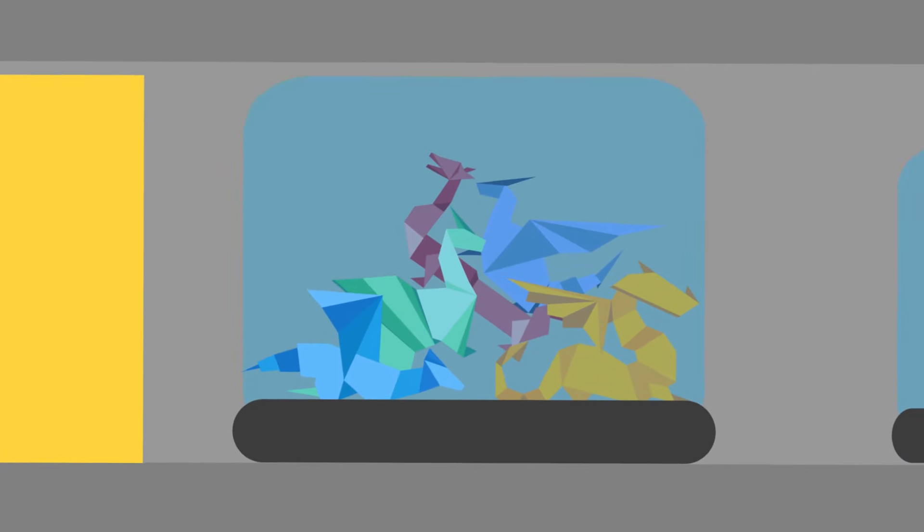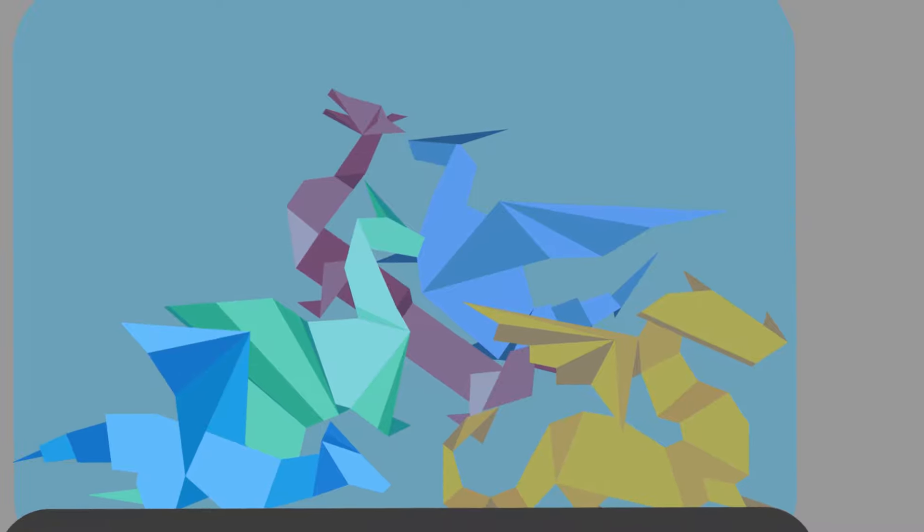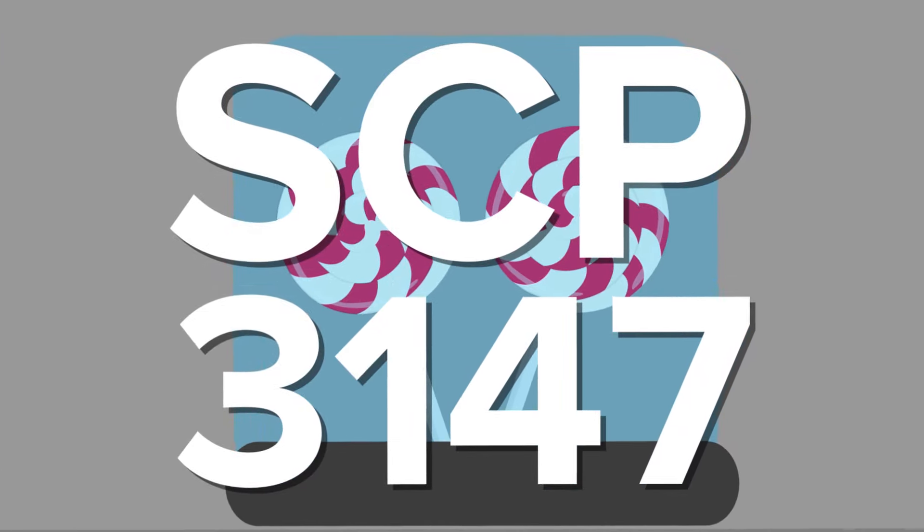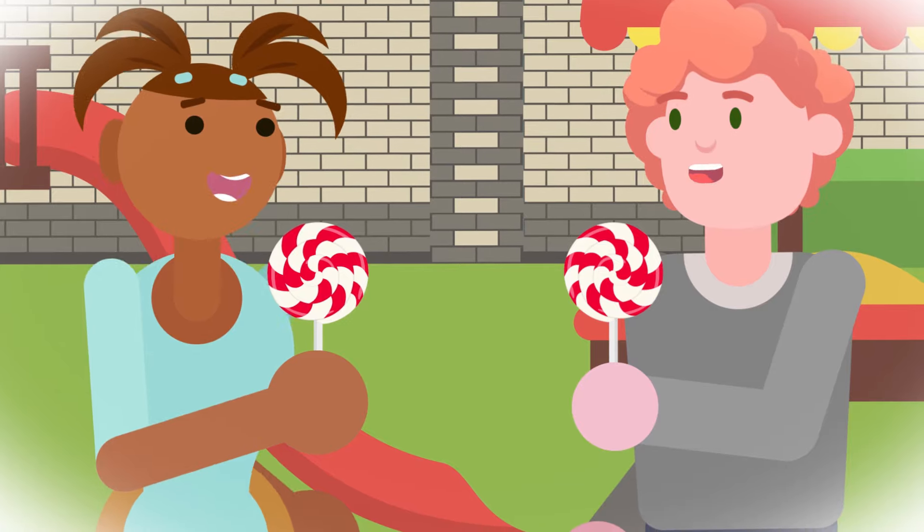Many of Wondertainment's toys are in the Foundation's possession, such as SCP-445, origami paper that takes on properties of whatever it's folded to look like, and SCP-3147, lollipops that allow people to switch voices with each other.